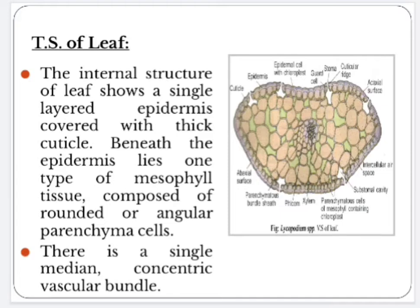Transverse section of leaf: the internal structure of the leaf shows a single-layered epidermis covered with a thick cuticle. Between the epidermis lies one type of mesophyll tissue composed of rounded or angular parenchyma cells. There is a single median concentric vascular bundle. Let us see the diagram of vertical section of leaf showing different tissue systems.